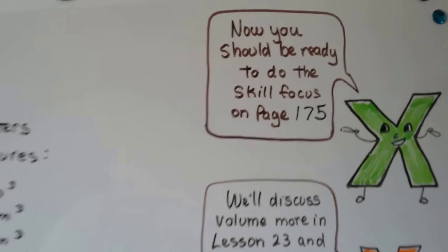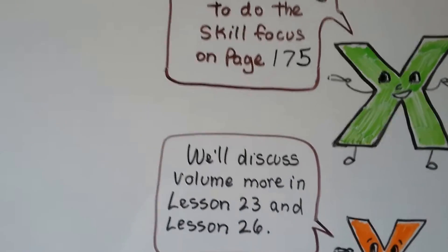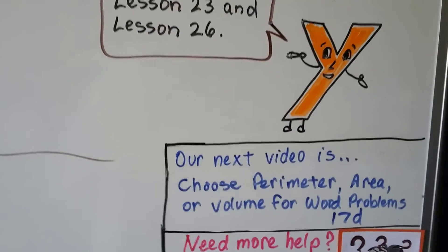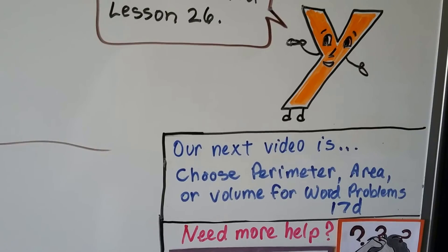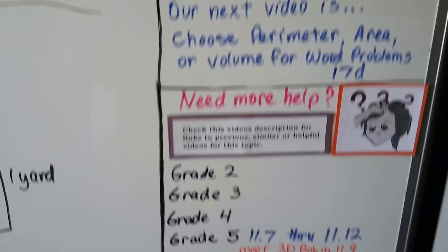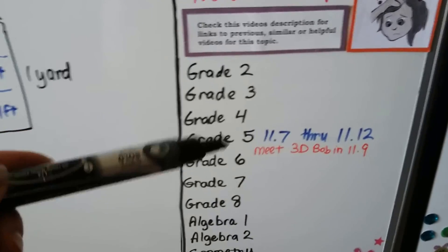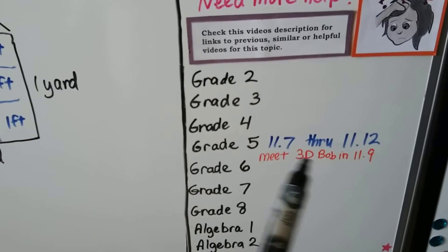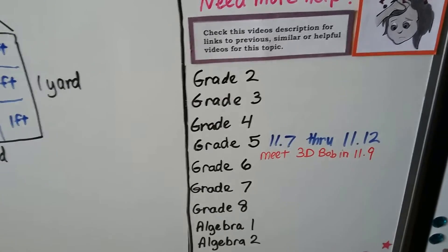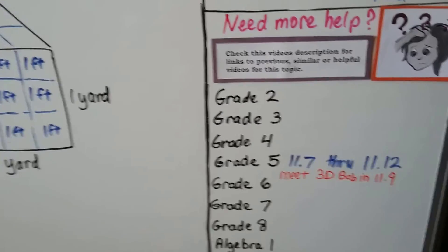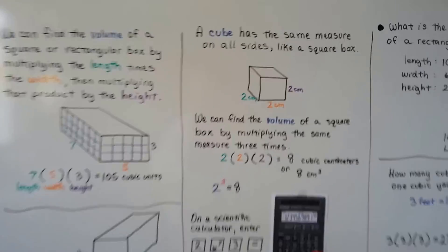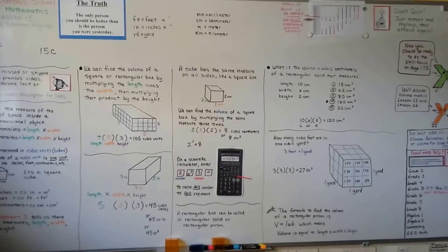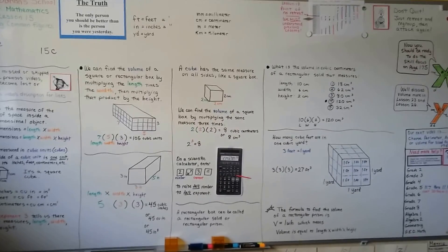So you should be ready to do the skill focus on page 175. We're going to talk more about volume in lesson 23 and 26 when we get to unit 4. Our next video is going to be choose perimeter area or volume for a word problem, lesson 17d. I've got some great videos from the grade 5 level about volume from lesson 11.7 through 11.12. And if you want to meet 3D Bob, he's in 11.9. So I made a real cute video about 3D Bob and his cousin Dave. So that's volume. We're going to go on and discuss some word problems, which should help you because there's lots of word problems on this test. I'll see you next video. Bye.